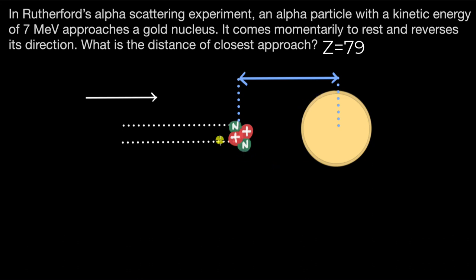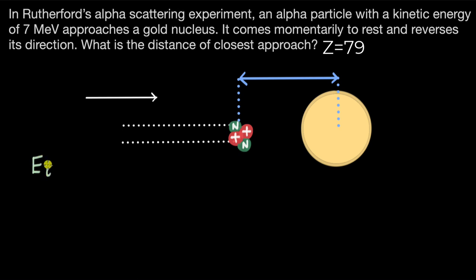The alpha particle had some kinetic energy to begin with — let's call that the initial state. And the final state is when the alpha particle is at rest. So where did that kinetic energy go? From the conservation principle, energy is conserved in this system. We can think of the system as containing the alpha particle and the gold nucleus, so the total initial mechanical energy equals the total final mechanical energy.